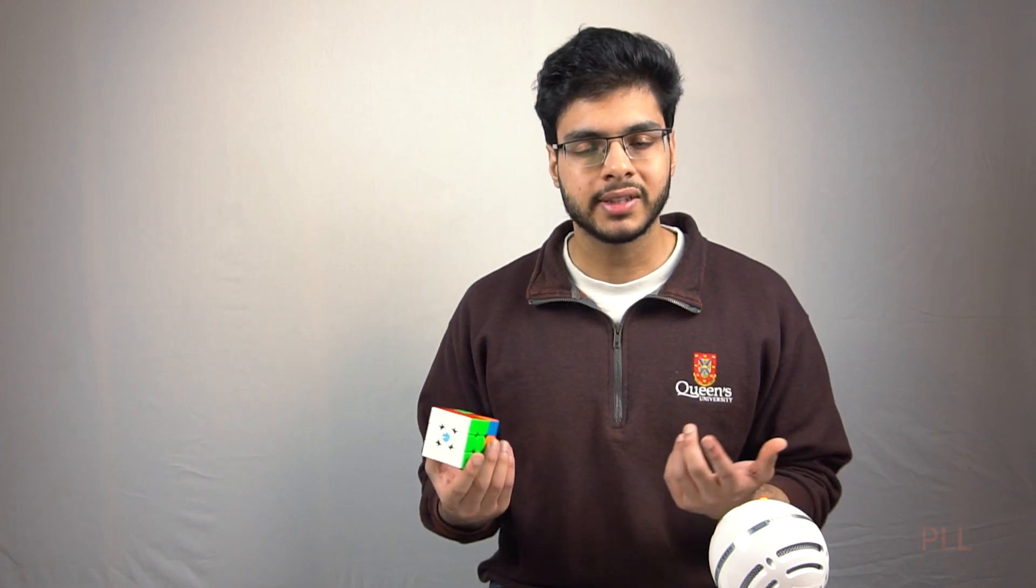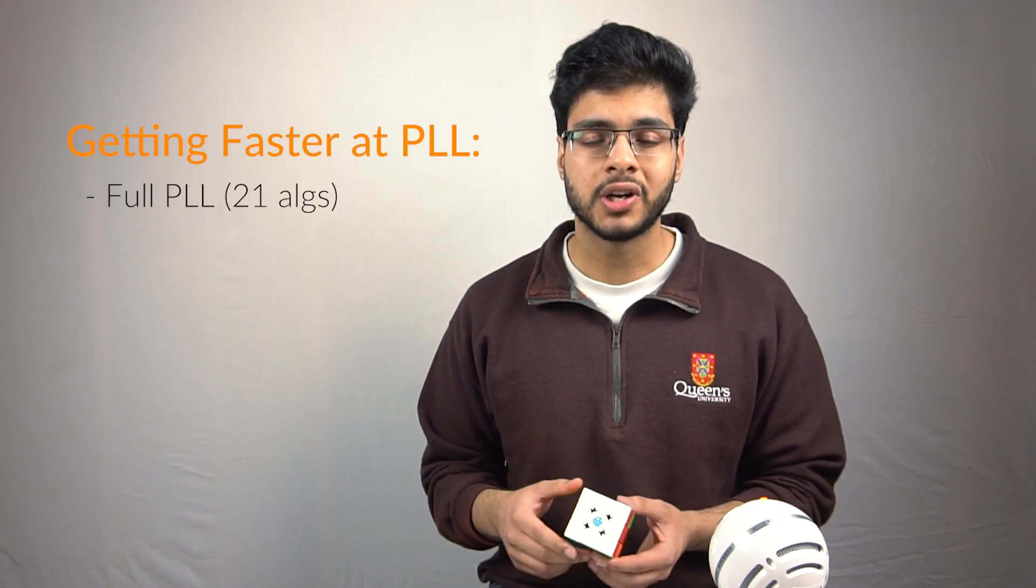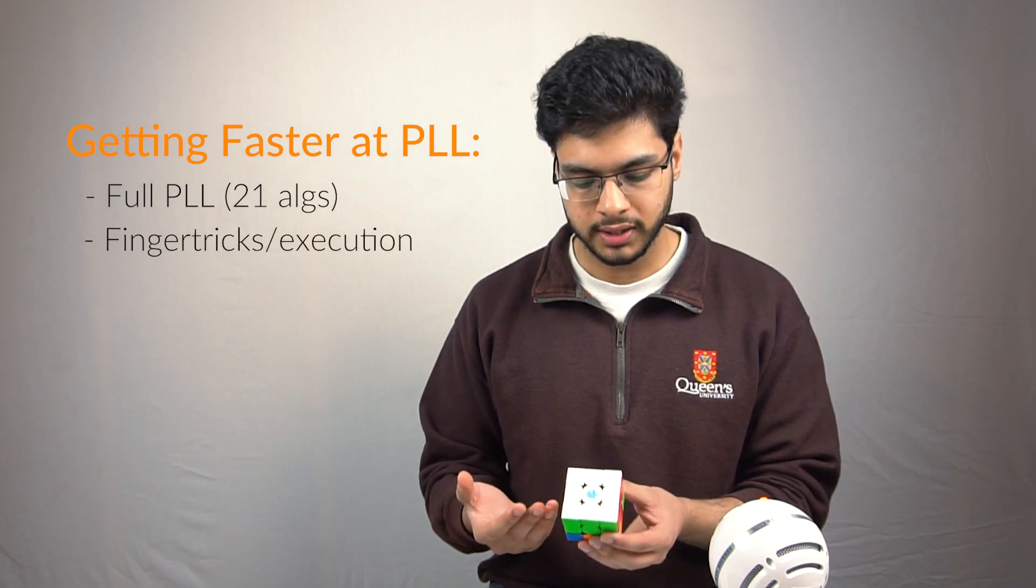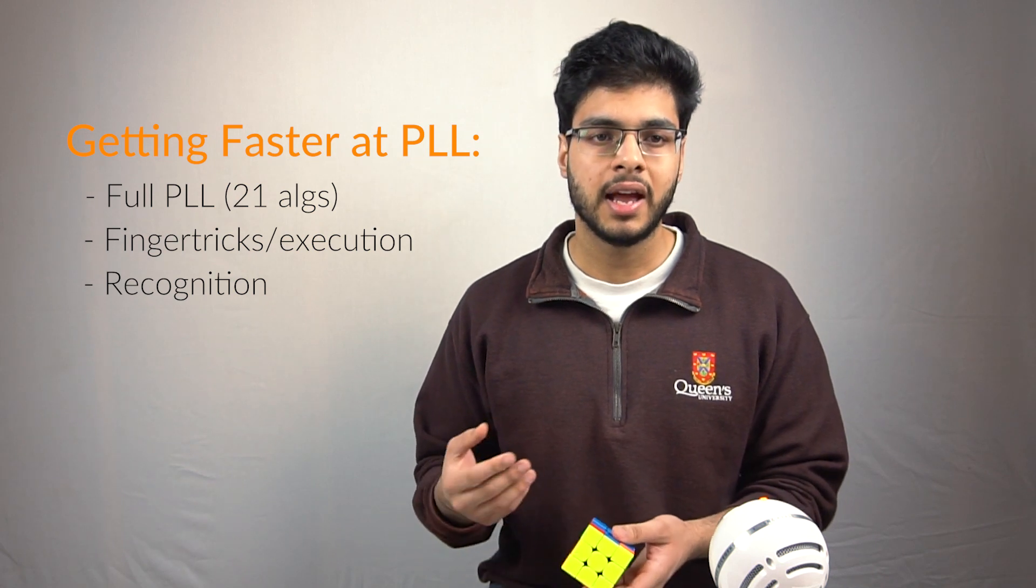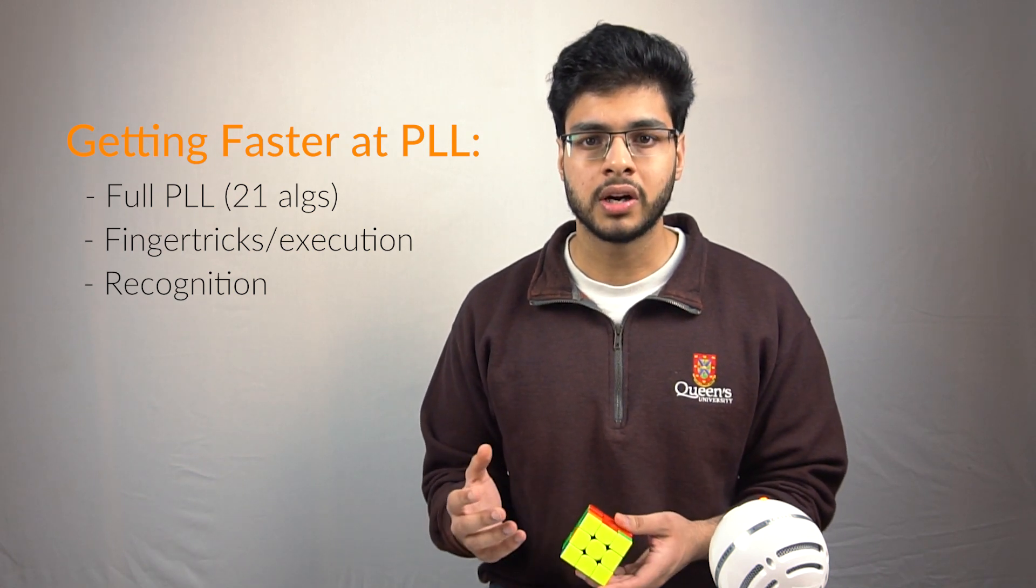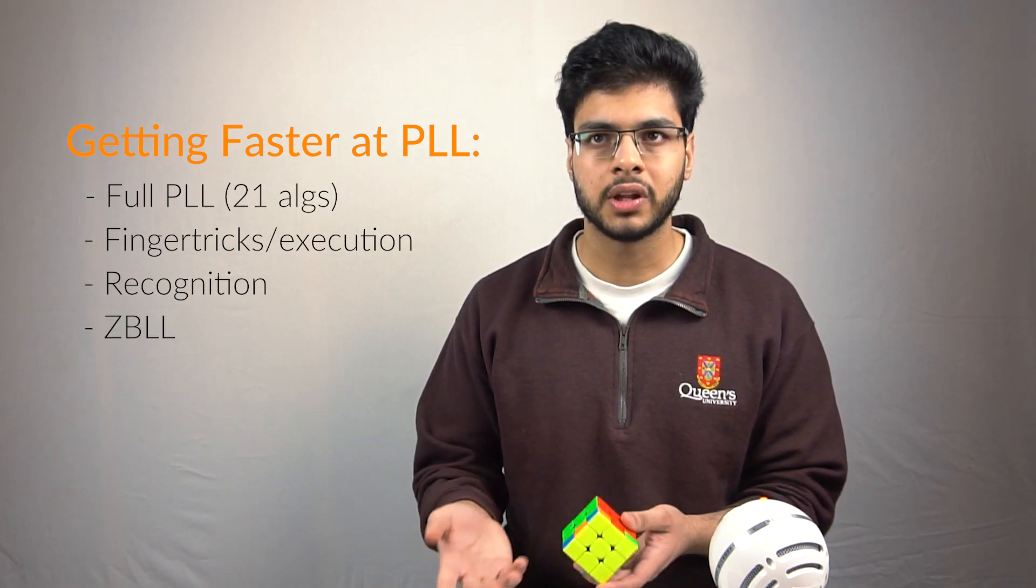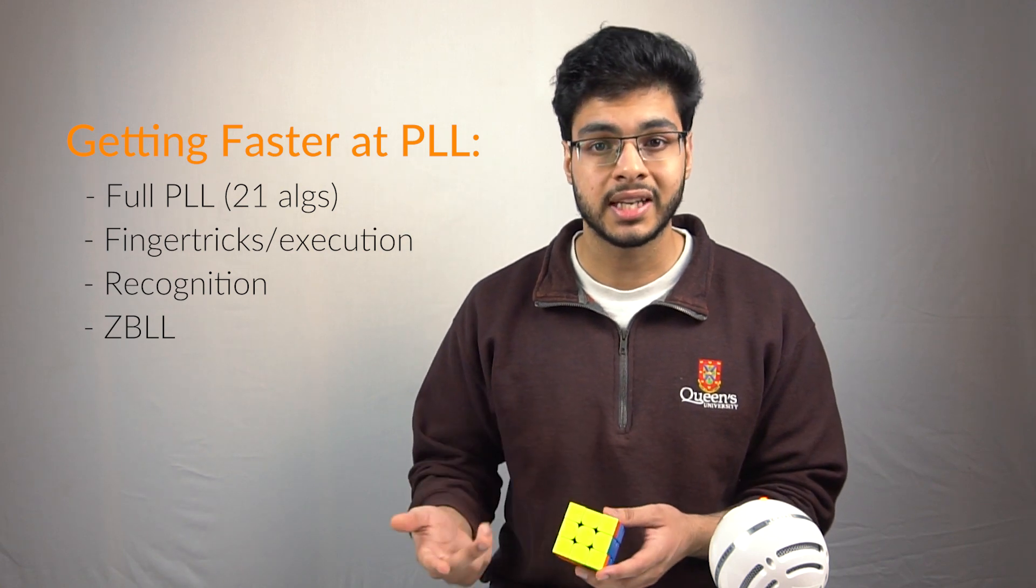It's a little bit harder to improve on your last layer than it is with, for example, the cross and F2L because those are solved intuitively, and it's much easier to find more efficient ways to solve them. When it comes down to the last layer, you're pretty much stuck with improving your finger tricks, your re-grips, and your recognition, predicting what cases you're going to get, and you can also apply some tricks where you can solve OLL cases so that you can get a PLL skip at the end.